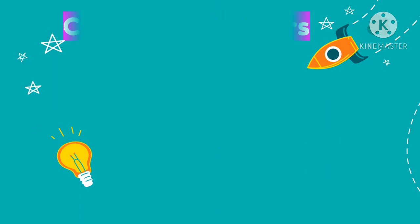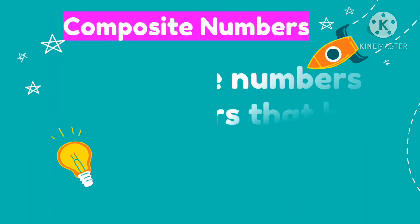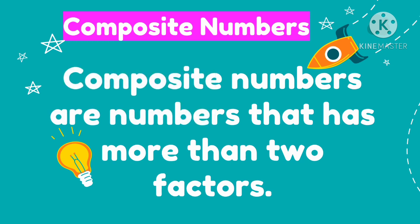Let's now define composite numbers. Composite numbers are numbers that has more than 2 factors. So unlike prime numbers, prime numbers has only 2 factors. So when the factors exceed 2, we call that as composite numbers.